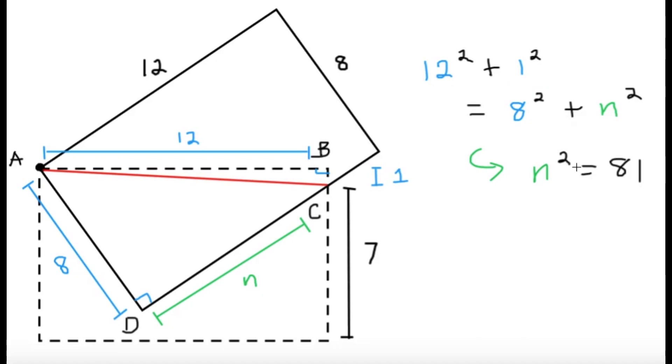And we can easily solve for n here, so you get that 12 squared is 144, plus 1, that's going to be 145, and then I'm just going to subtract 8 squared which is 64, and you're going to get that n squared equals 81.